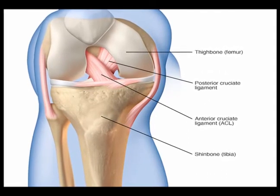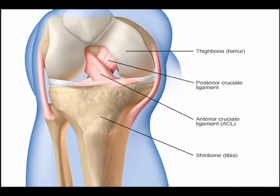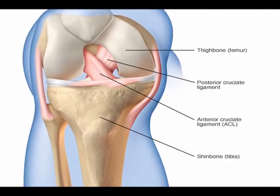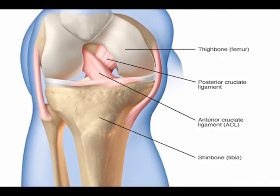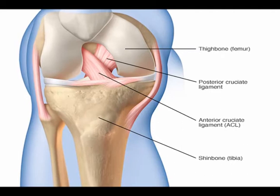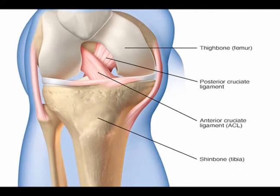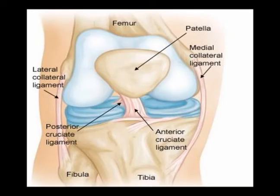It is classified as being intercapsular because it is located inside the knee joint capsule. It is posterior to the anterior cruciate ligament, which is often abbreviated to the ACL.